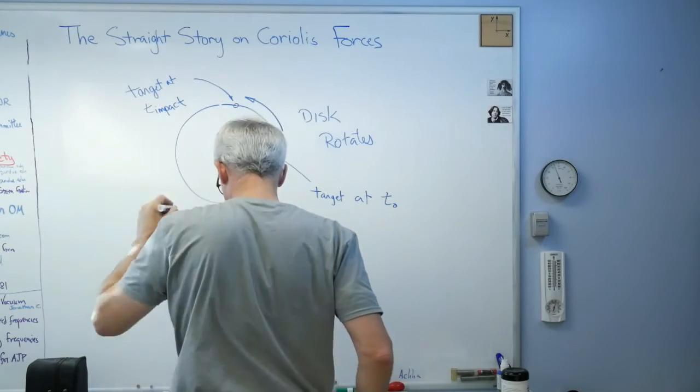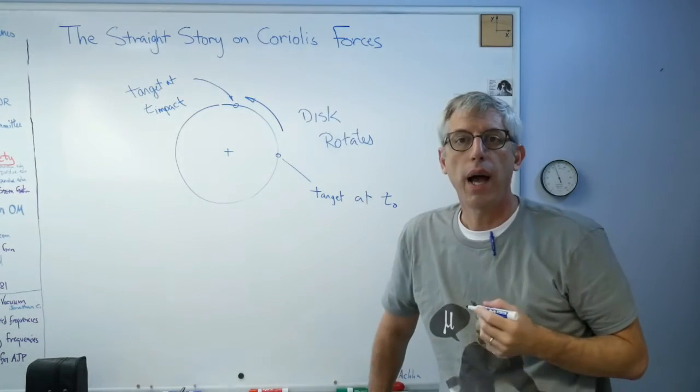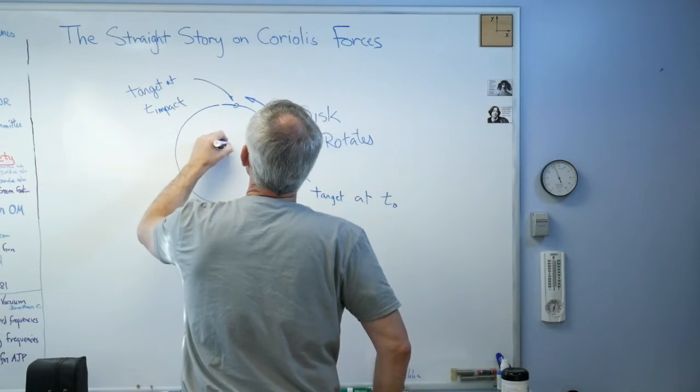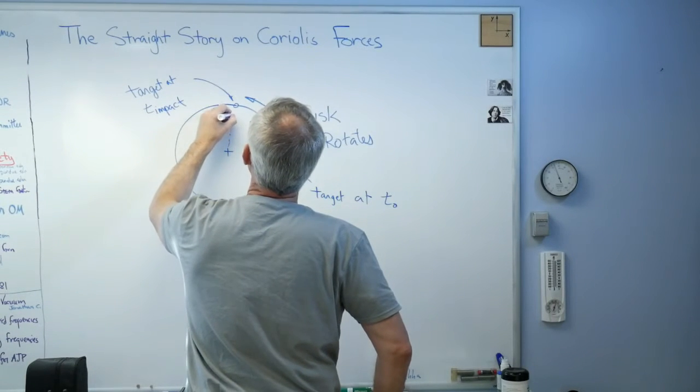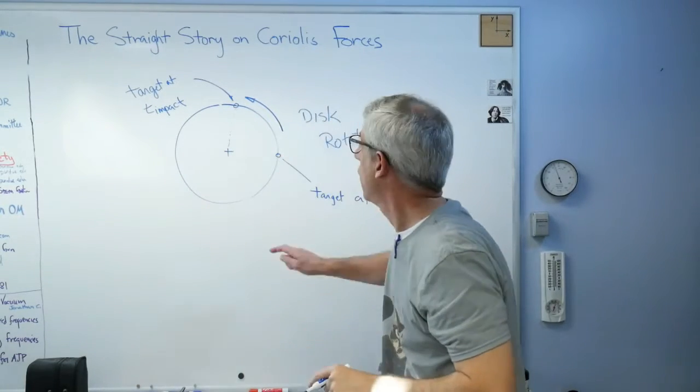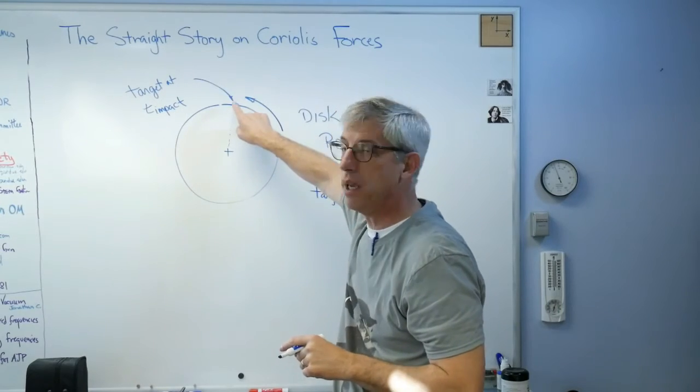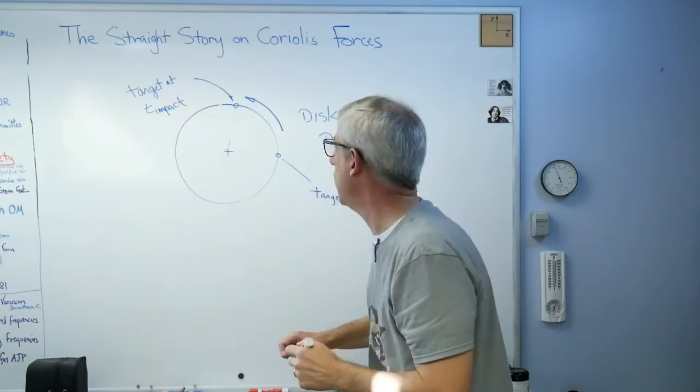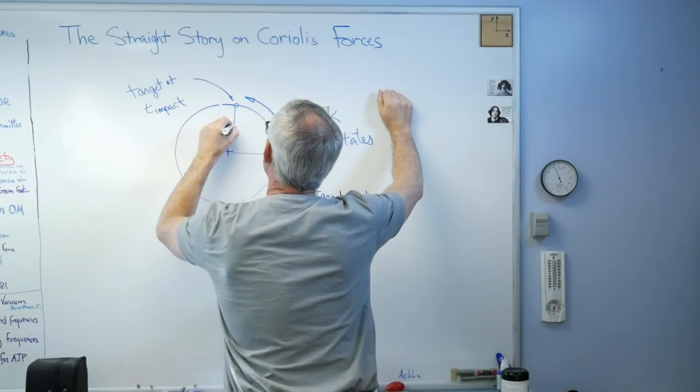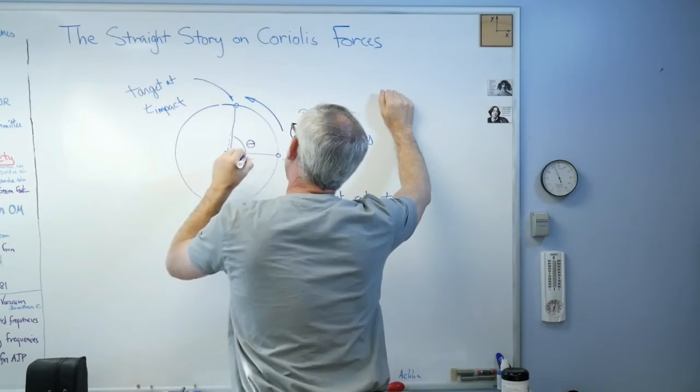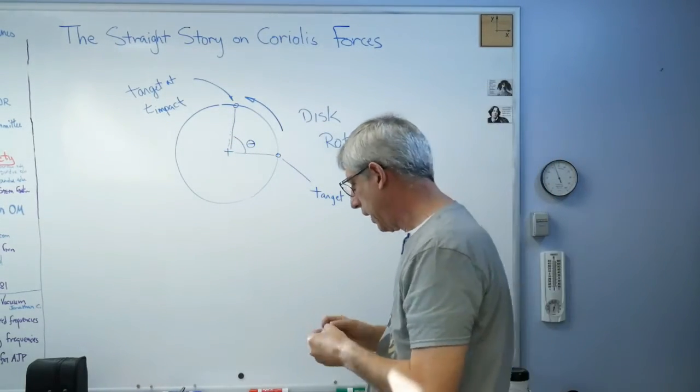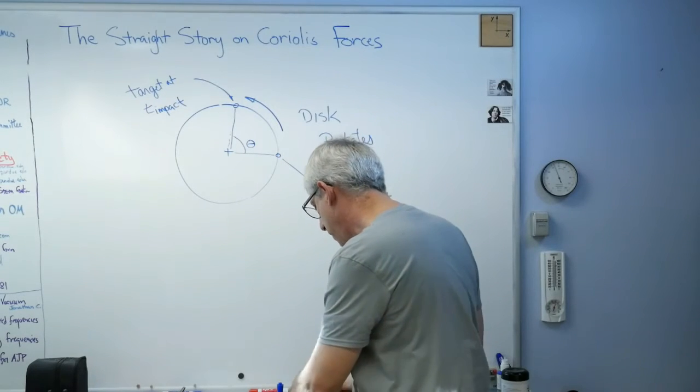Okay, well that looks good. So how do you hit the target? Well, your little device that projects the marble or whatever it is, you aim right there. Even though this is where the target is when you fire, that's where the target is going to be when you get to the edge of the disc. So what you've got to do is you've got to lead the target by some angle theta.